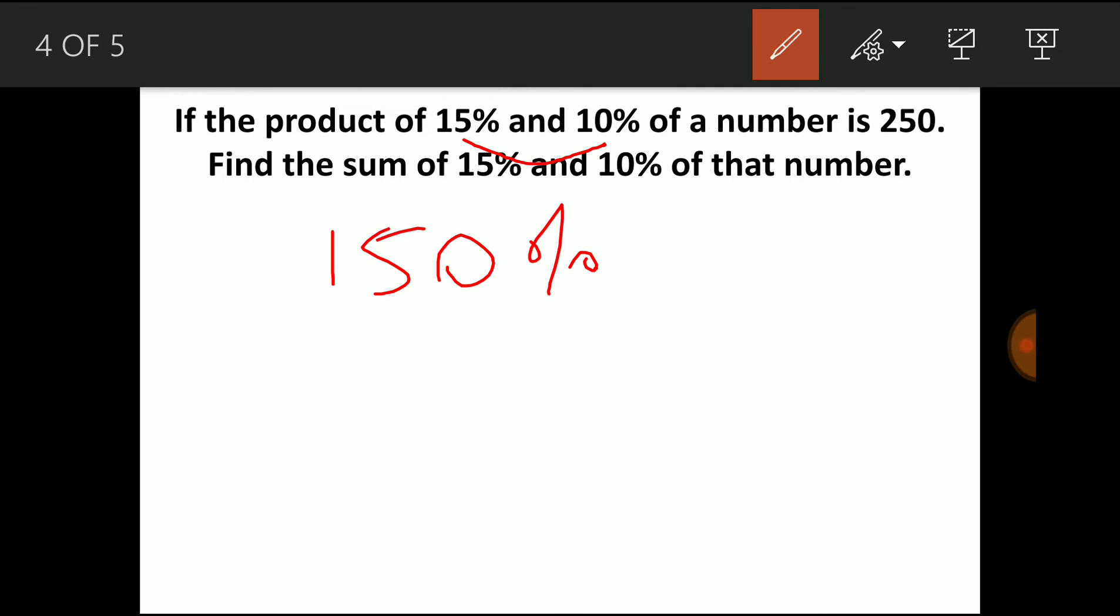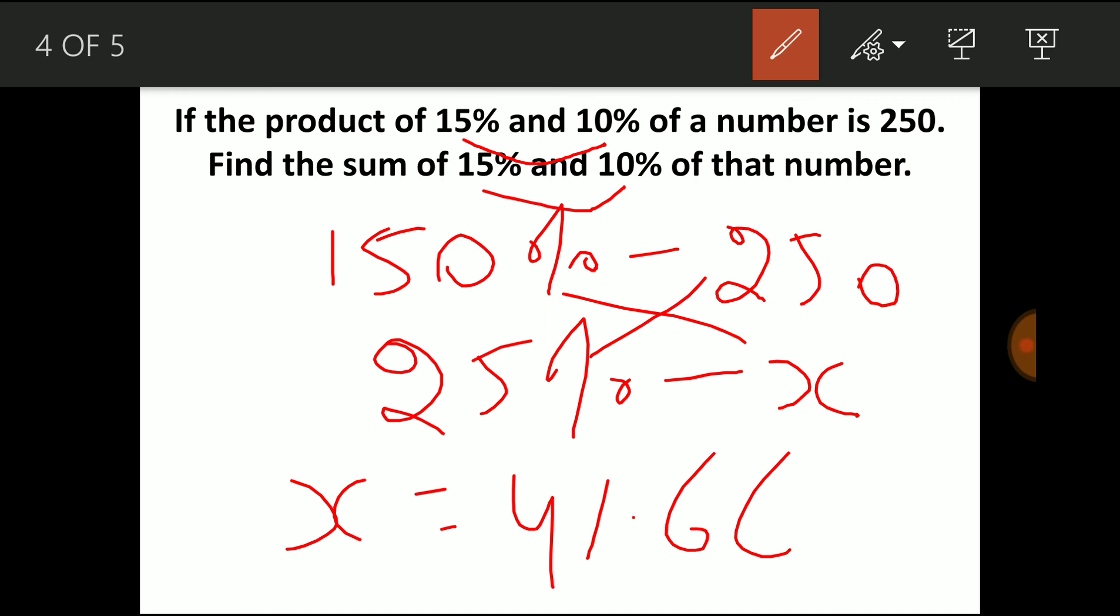So 150% of the number is 250. Now you have to find the sum of 15% and 10%. So sum of 15 and 10 gives you 25. So 25% is the number which you have to find, which equals x. To find x, cross multiply: x equals 41.66. So 41.66 is 25% of the particular number.